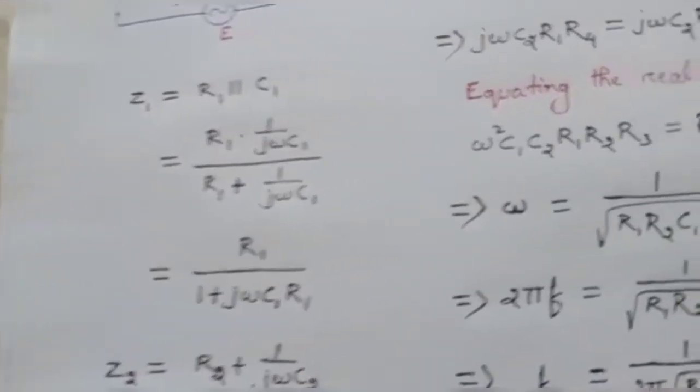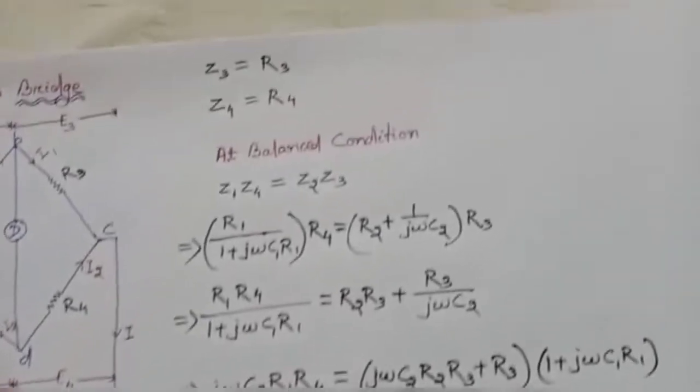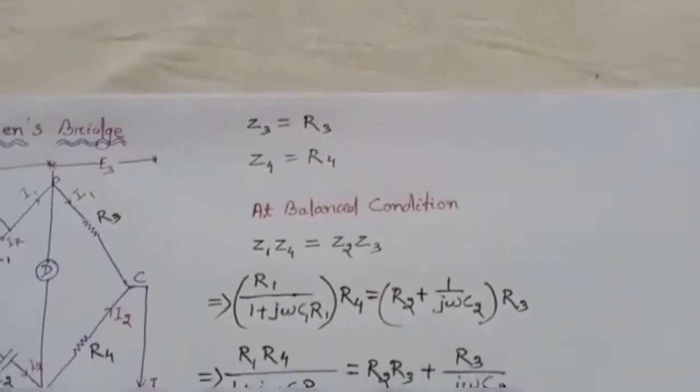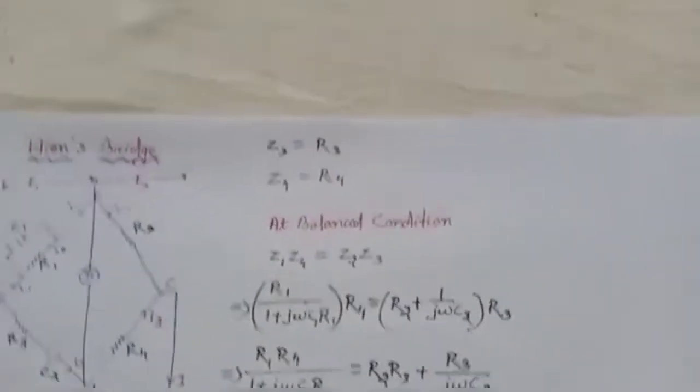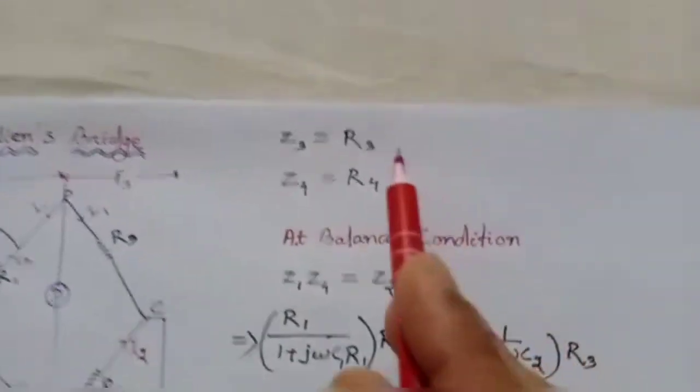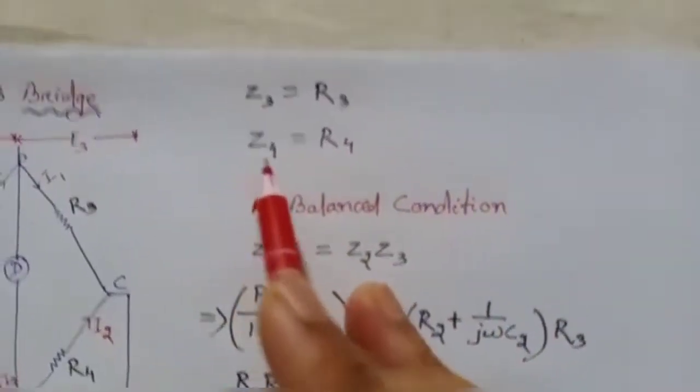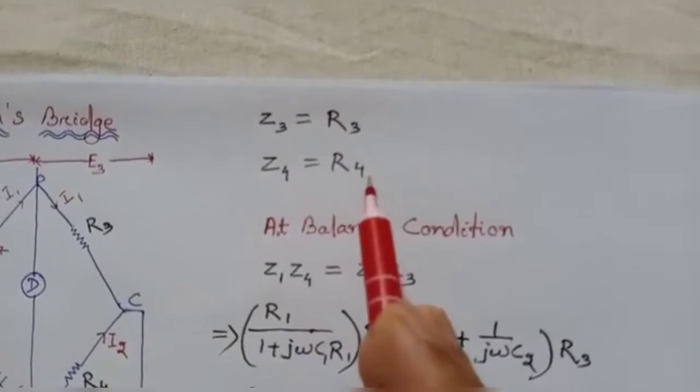For Z3 and Z4, both are resistive branches, so Z3 = R3 and Z4 = R4.